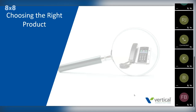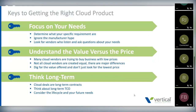The next step is: how do I choose the right product? There are so many out there. We focus on three specific keys to getting the right cloud product. The very first one is focusing on your own needs. You need to determine what specific requirements are driving you to cloud — really write down and identify what you have to have and what is important to you. Then ignore all the manufacturer hype. Manufacturers and vendors are really good at selling you on what they think is cool. What you want is somebody who will stop, listen, ask a lot of questions, and find out what your needs are rather than spending a lot of time telling you how great they are.